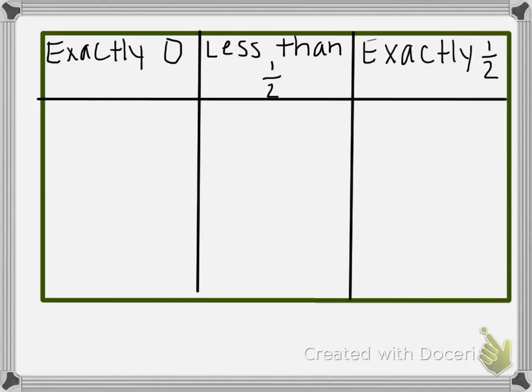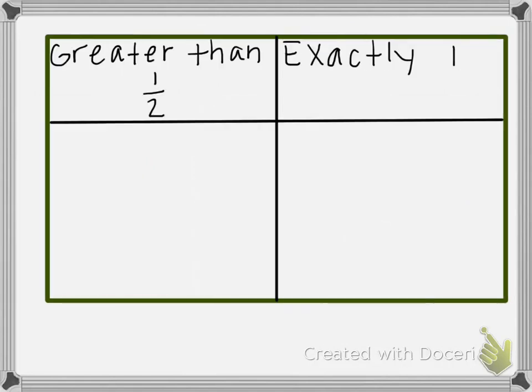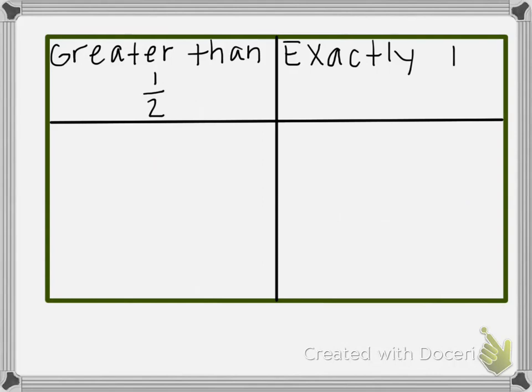We're going to look at different fractions and decide if they are exactly 0, less than 1 half, exactly 1 half, greater than 1 half, or exactly 1. And as we look at the different fractions, we're going to put them into this table.